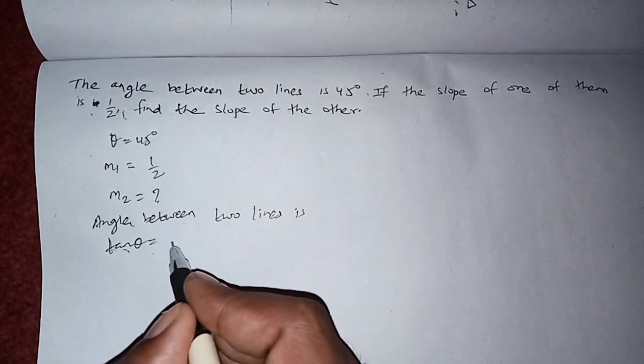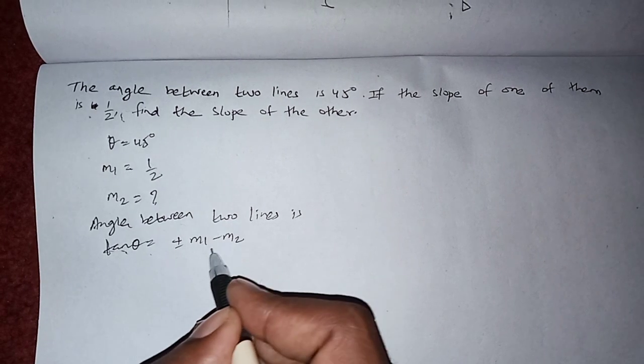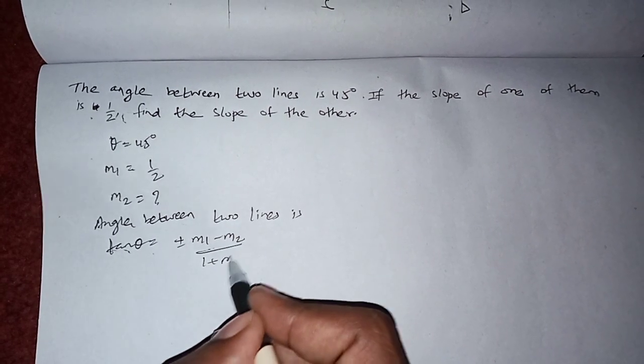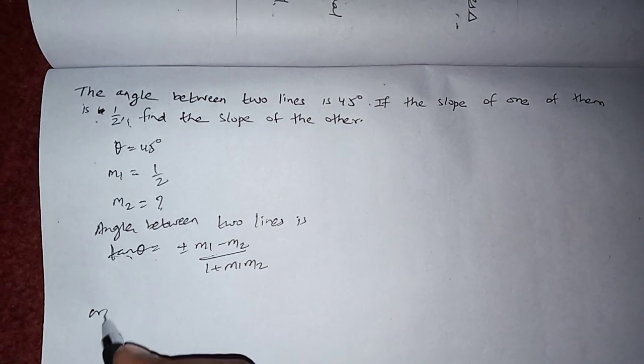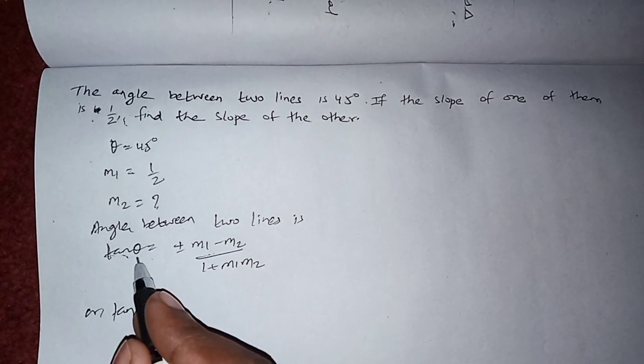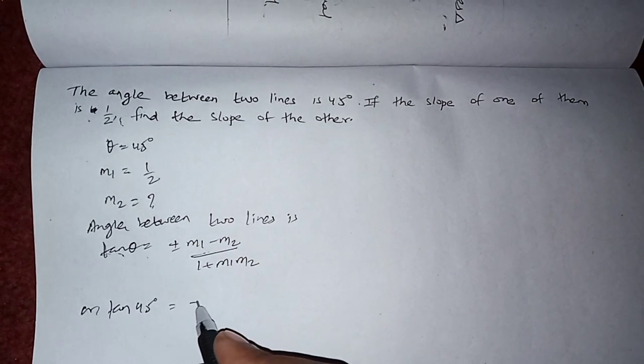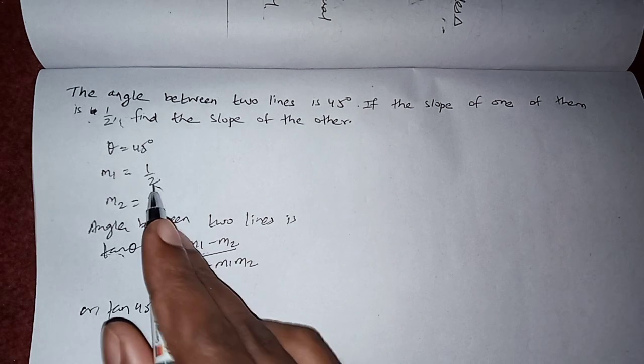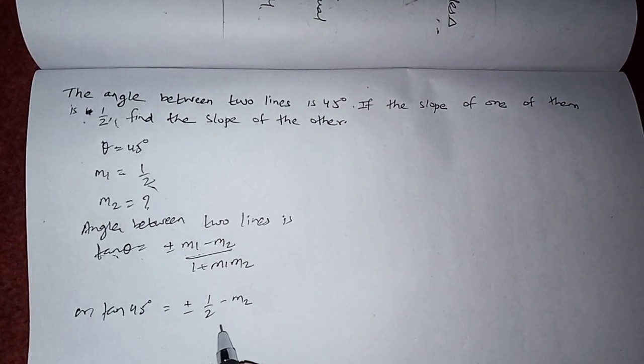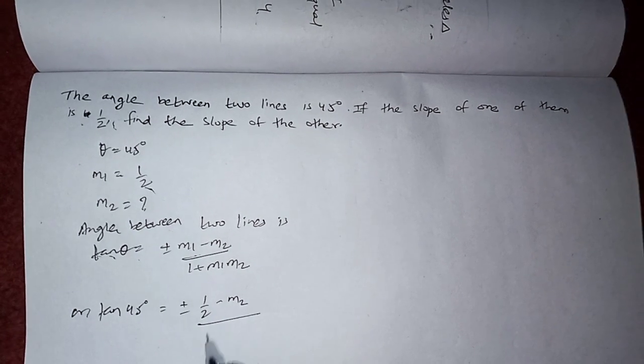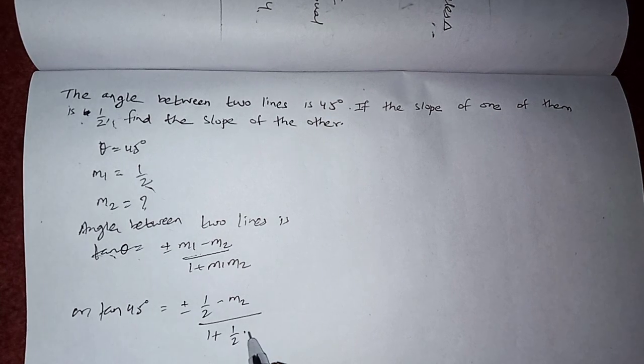So we know the value of theta. It is given as 45, so tan 45 degrees. m1 is here 1 by 2, so 1 by 2 minus m2 divided by 1 plus m1, m1 is 1 by 2 dot m2.